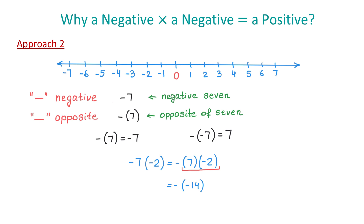But then, the opposite of negative 14 is positive 14. So, we will write positive 14. Therefore, negative 7 times negative 2 is positive 14.